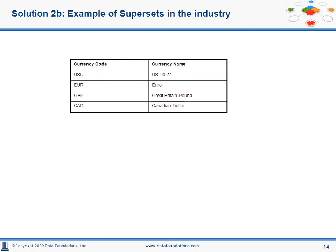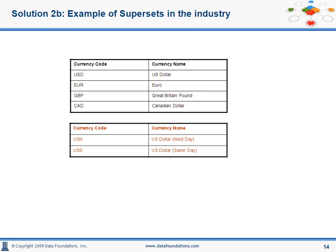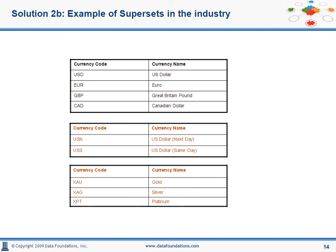The superset concept is not unique, and I'm sure at least 90% of you on this call use the currency master from ISO. Some of the sample currencies are listed here. Here's something you may not know: the U.S. dollar same day and the U.S. dollar next day are valid currencies, or that gold, silver, and other tradable metals are also currencies.